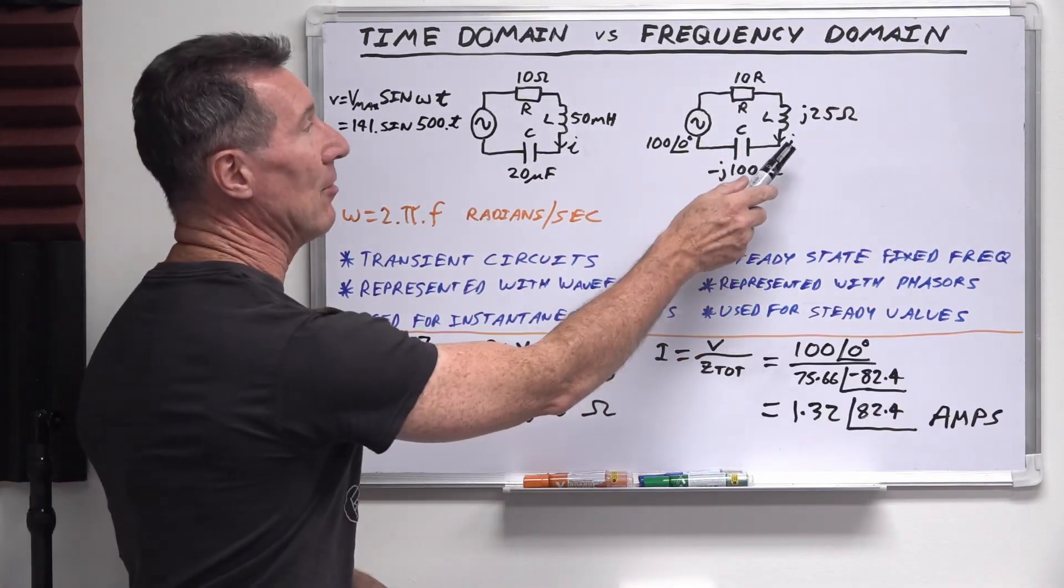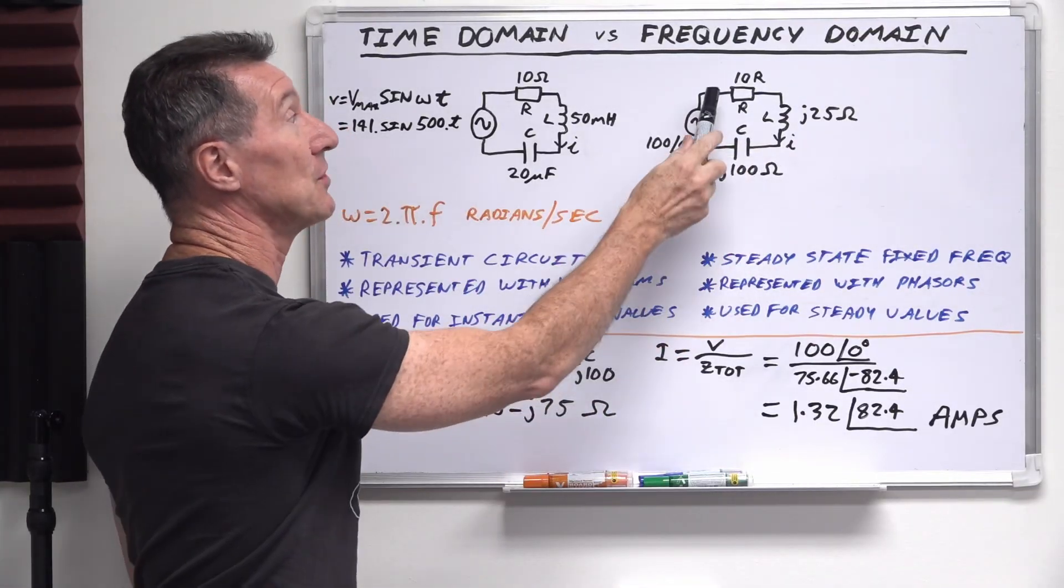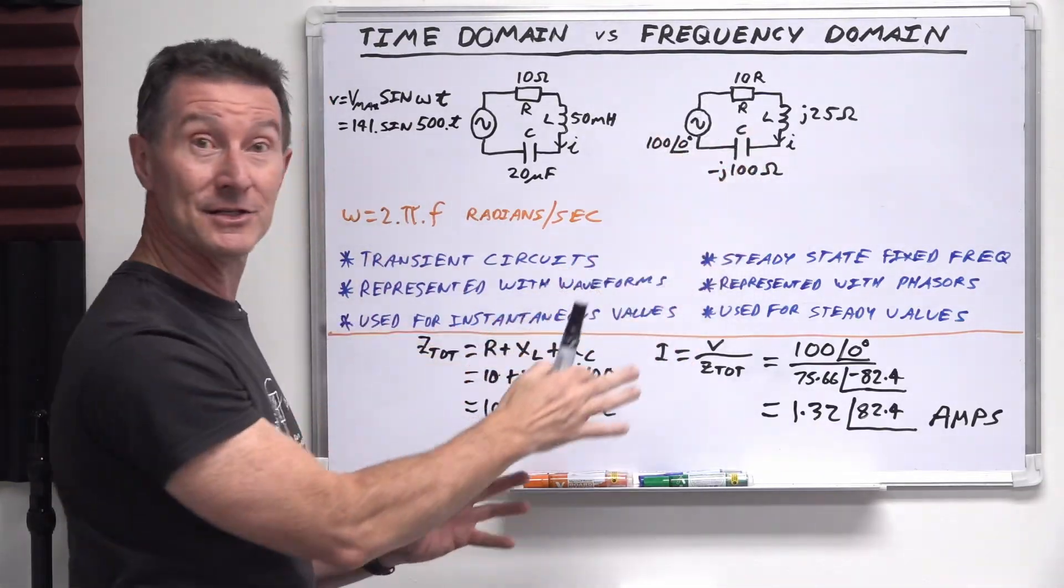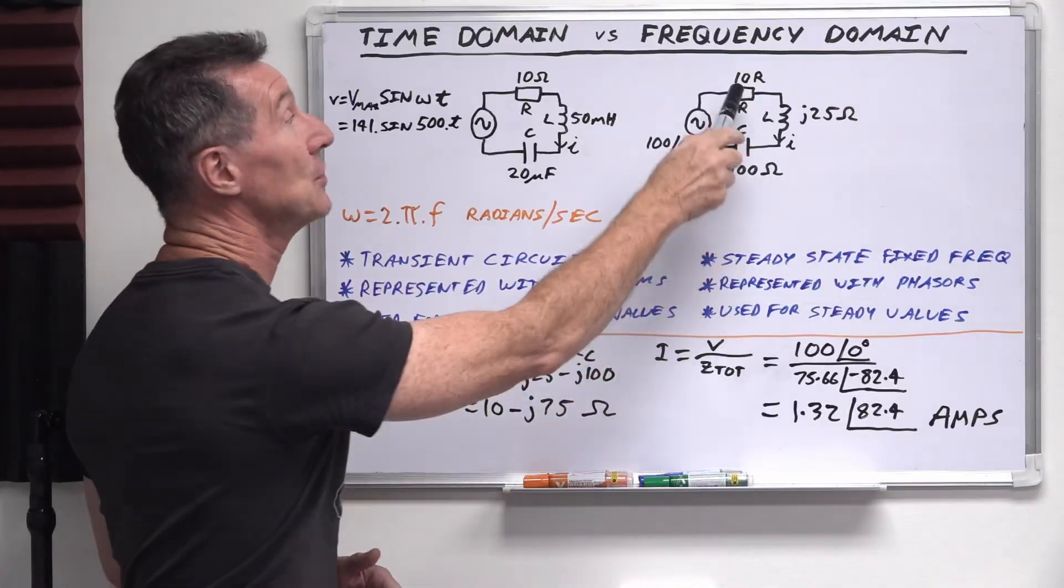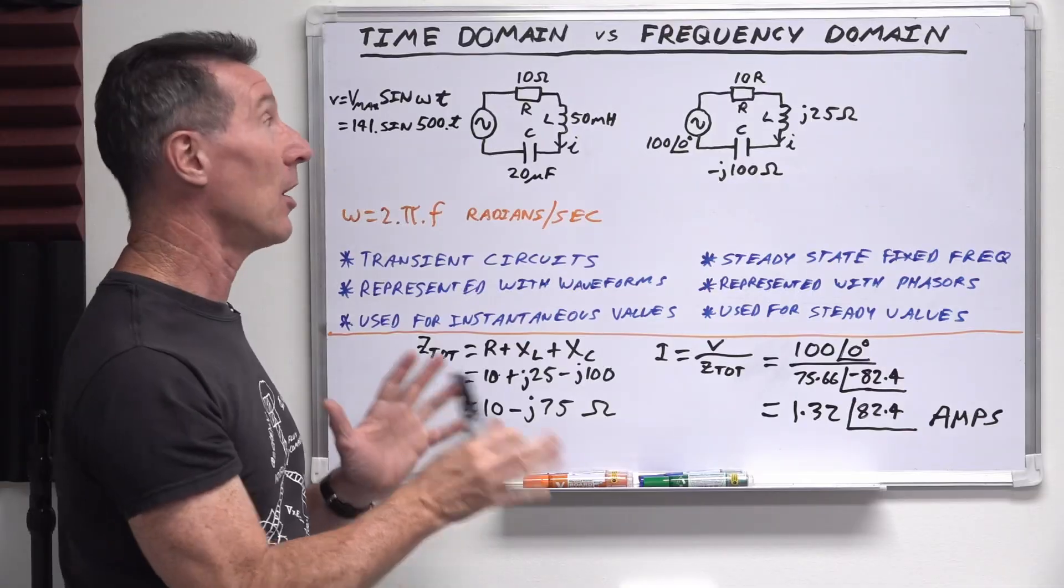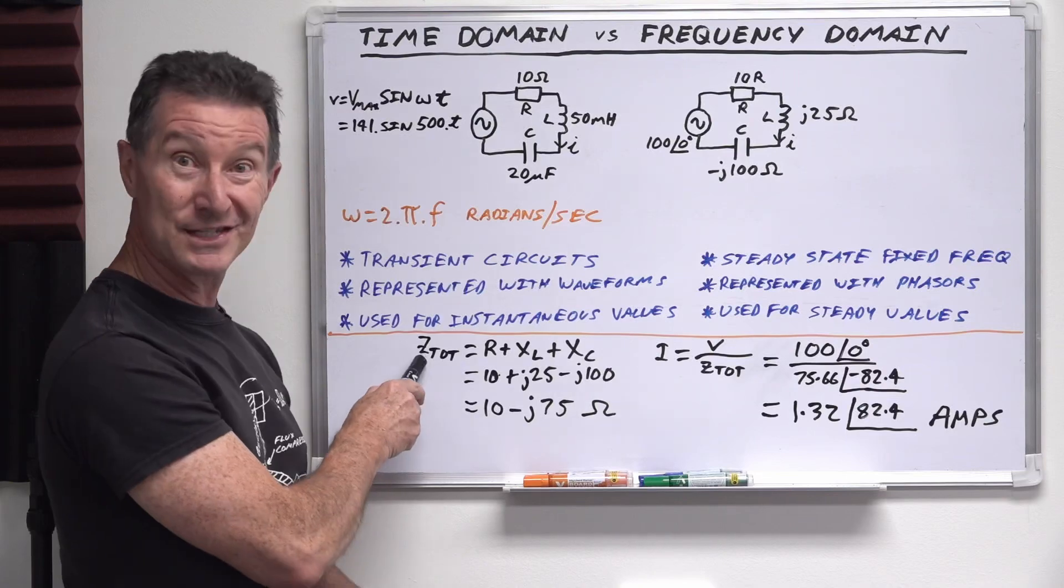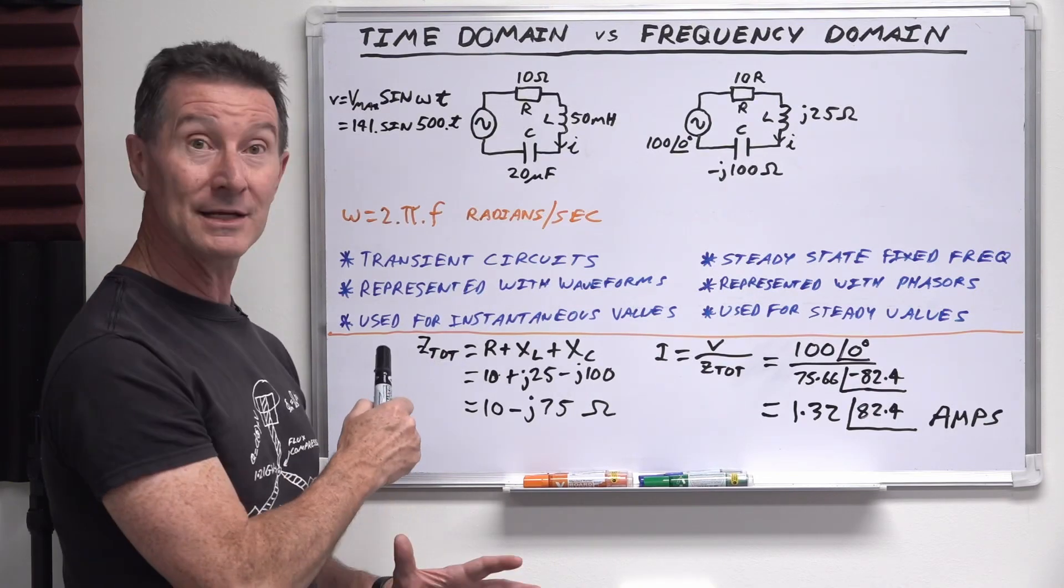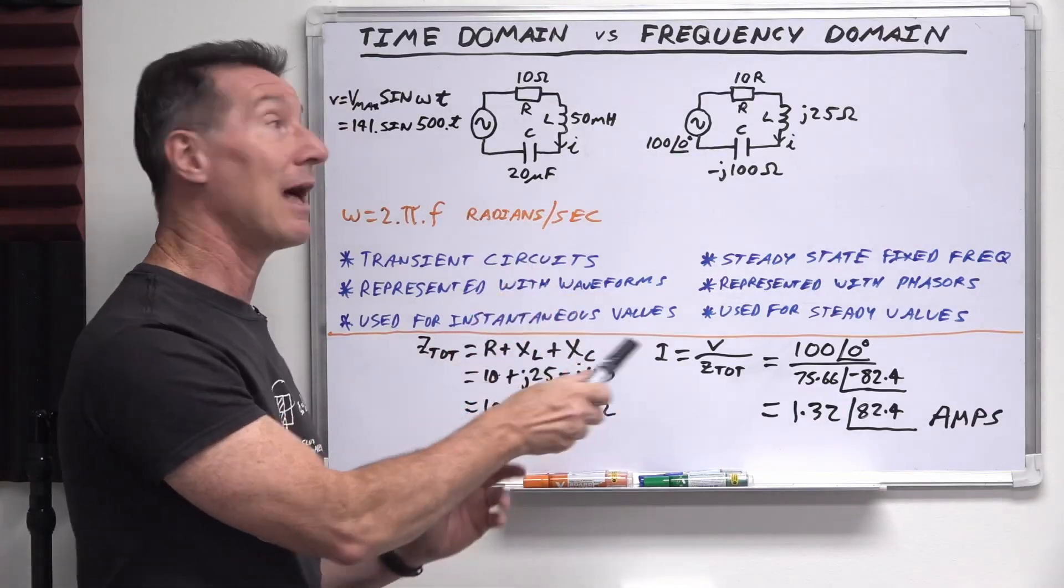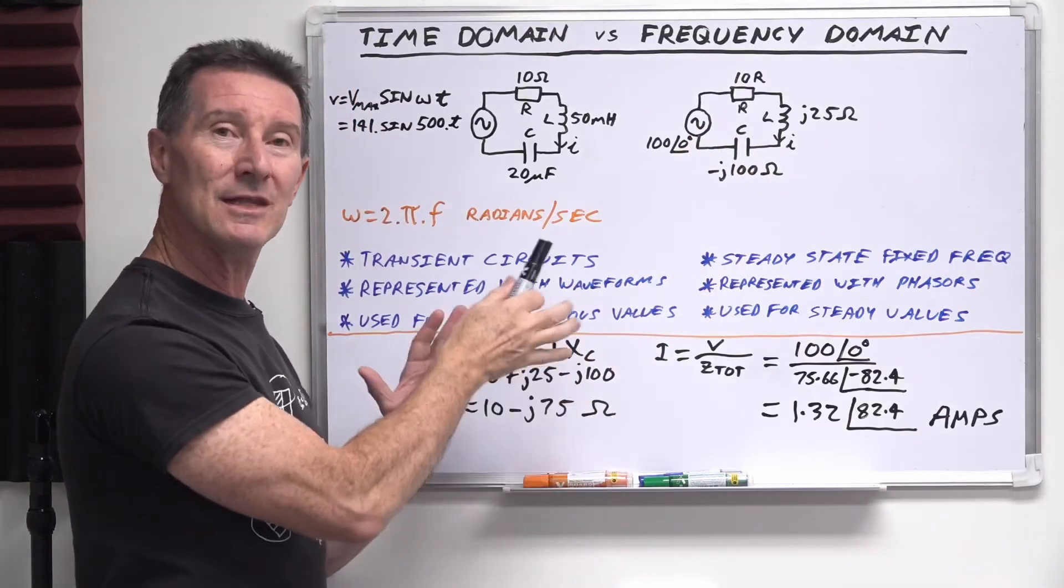So how do we solve for the current flowing in this circuit? Well, it's a series circuit. So it's just the voltage divided by the total resistance here, or because we're dealing in terms of complex reactances here, total impedance. And we'll do impedance versus reactance in a future video. But to briefly explain the difference here, impedance, which is denoted by Z.